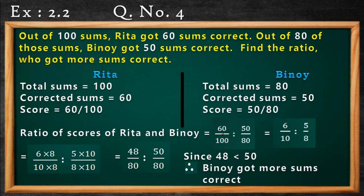So 60 divided by 100. In case of Benoy, the score is 50 divided by 80, because there are 80 equations. Now the ratio of the scores of Rita and Benoy will be 60/100 is to 50/80. If you simplify by cutting zeros, you get 6/10 and 5/8. Now in order to find out which ratio is greater, we have to make the denominators equal.